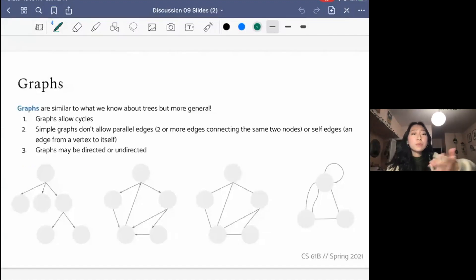Graphs are super similar to what we know about trees, but they are a little more general. Graphs allow cycles unlike trees. So for example, while a tree is a graph, this tree is a valid graph, graphs also allow cycles. So this is a valid graph, even though it's not a valid tree. Another thing is that simple graphs don't allow parallel edges, which means two or more edges connecting the same two nodes, or self edges, which means an edge from the vertex to itself.